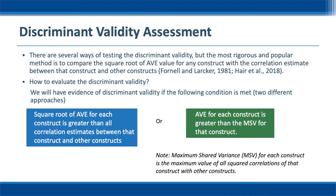The second method is called Maximum Shared Variance, or MSV method. MSV for each construct is the maximum value of all squared correlations of that construct with other constructs. If AVE for each construct is greater than MSV for that construct, then we have evidence of discriminant validity. As you can see, they are essentially the same. In my opinion, the MSV method is easier to present and interpret, and I will use the MSV method in this video.